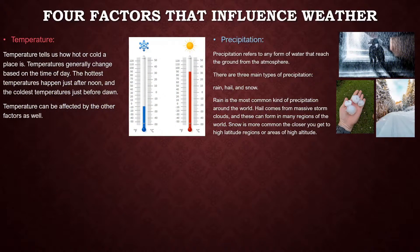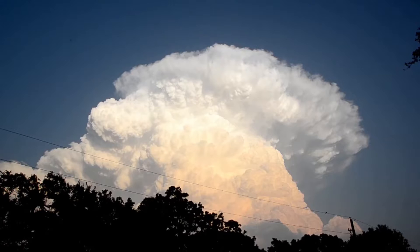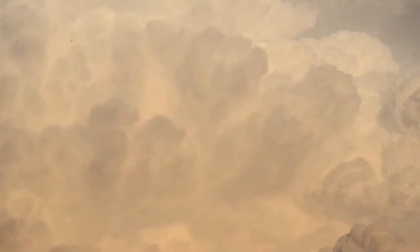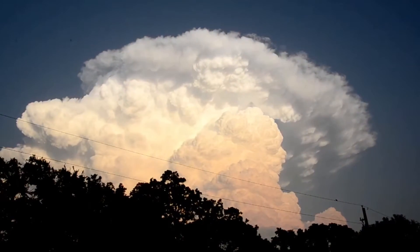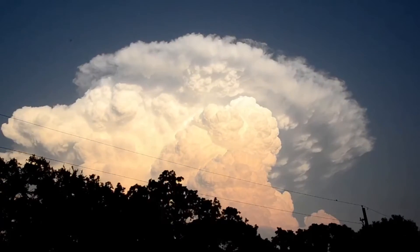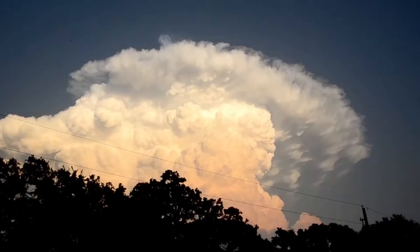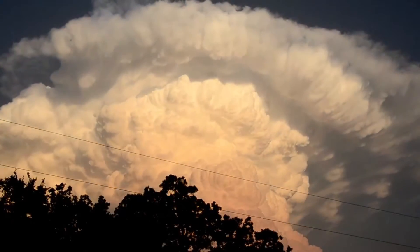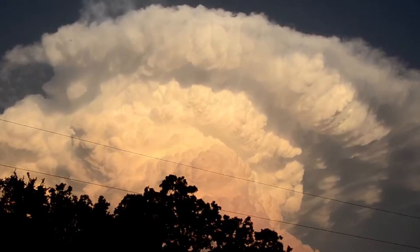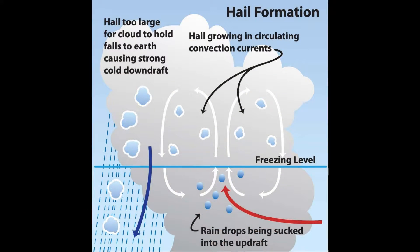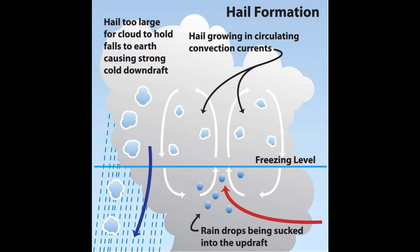Hail is a frozen raindrop that forms in massive thunderstorm clouds called cumulonimbus clouds. Inside these clouds, condensed raindrops are churned by extremely strong winds that create what is called an updraft. As the raindrop falls through the cloud, these updraft winds blow strong enough to cause the raindrop to rise back up into the cloud. If the raindrop is blown high enough, it reaches a height where it starts to freeze — this is called the freezing level. The frozen raindrop is now at the core of the hailstone.